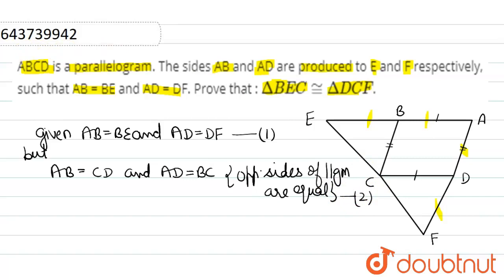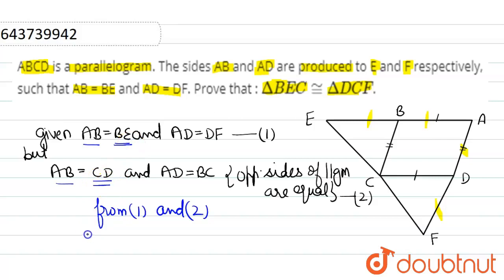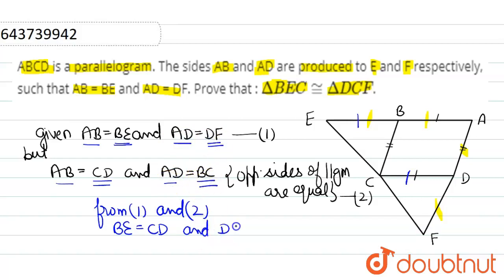From 1 and 2: statement 1 says AB equals BE, and statement 2 says AB equals CD, which means BE equals CD. Similarly, statement 1 says AD equals DF, and statement 2 says AD equals BC, so DF equals BC. Mark this number 3.